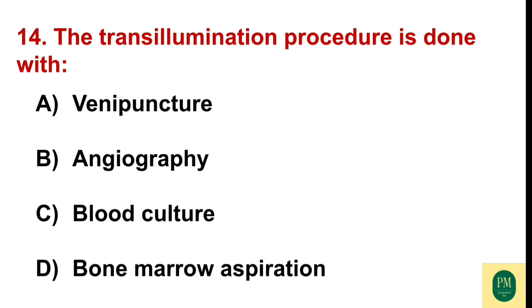The transillumination procedure is done with: Option A: venipuncture. Option B: angiography. Option C: blood culture. Option D: bone marrow aspiration. The correct option is Option A — venipuncture.